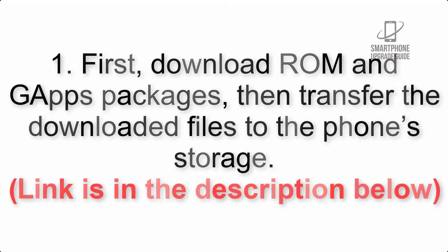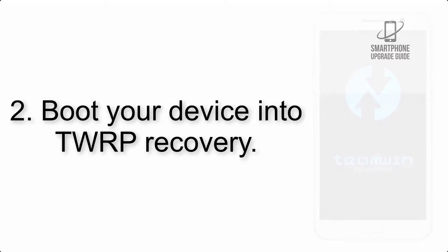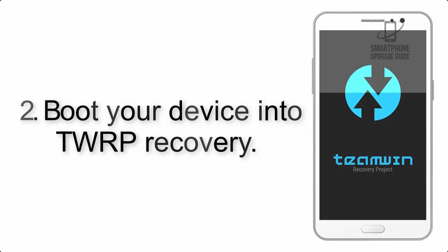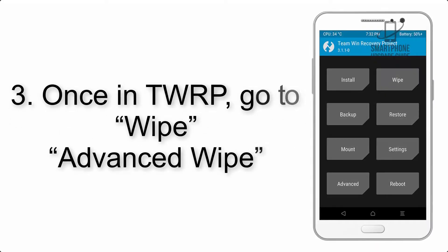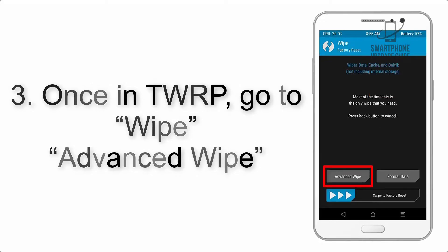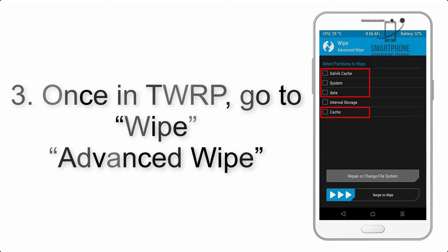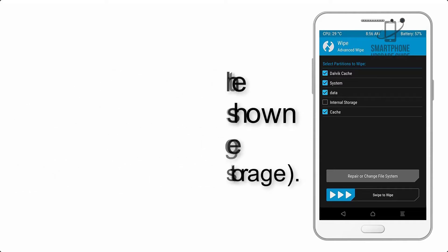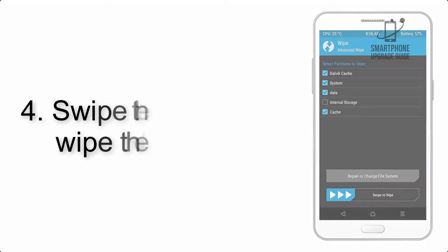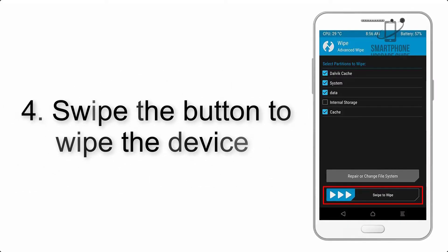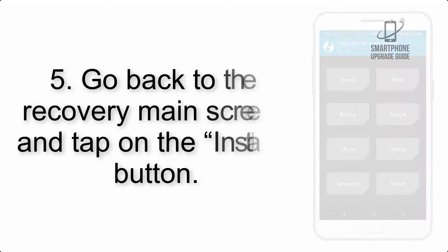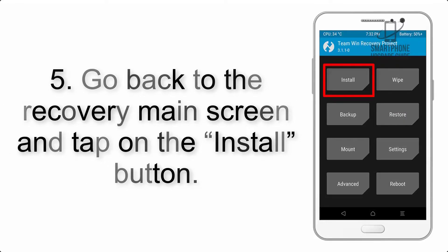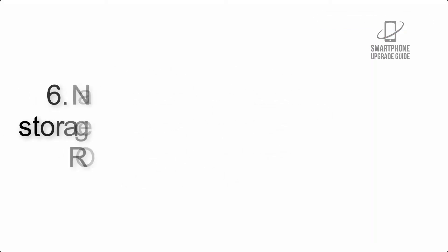Step 2: Boot your device into TWRP recovery. Once in TWRP, tap on Wipe, then Advanced Wipe, and select the checkboxes as shown in the image, excluding internal storage. Step 4: Swipe the button to wipe the device.